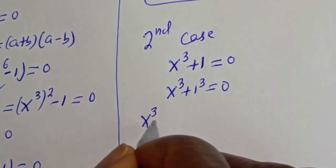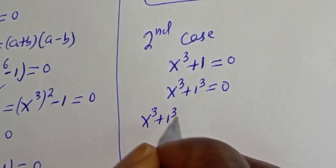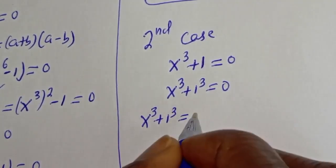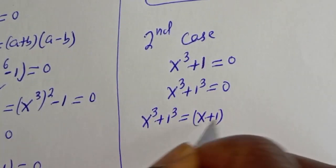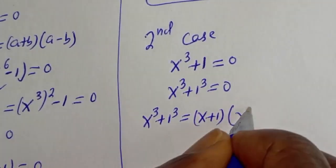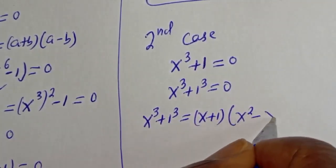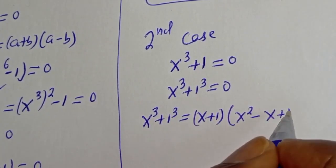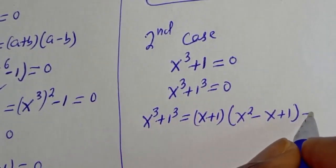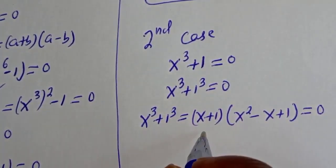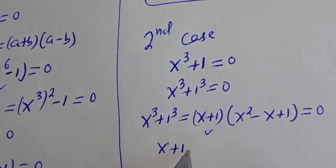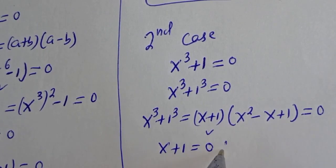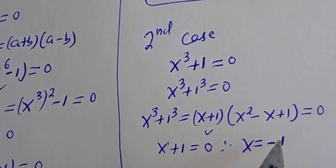Now for case 2: s raised to power 3 plus 1 is equal to 0. Using the sum of cubes, this equals s plus 1, bracket, s squared minus s plus 1, equal to 0. Then from here, s plus 1 is equal to 0, therefore s is equal to minus 1.